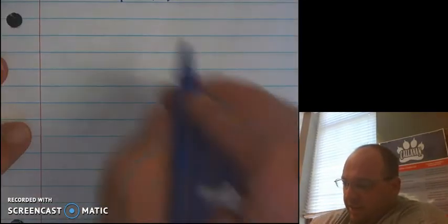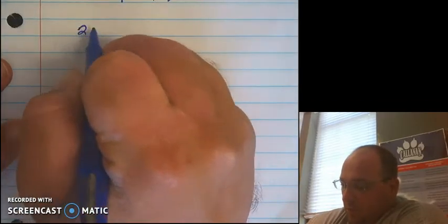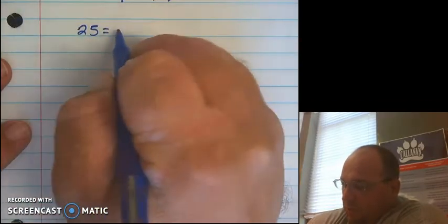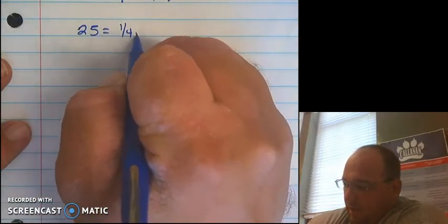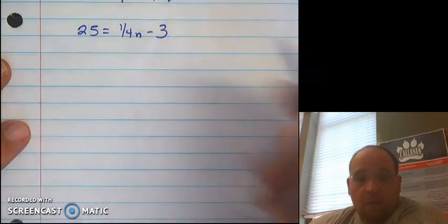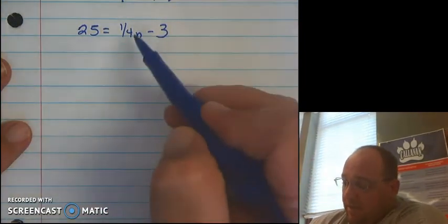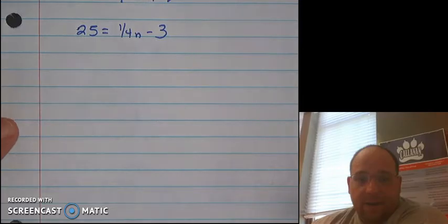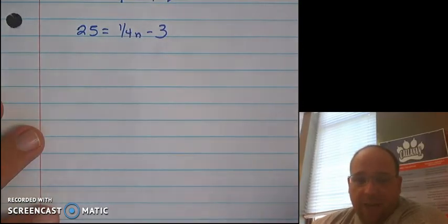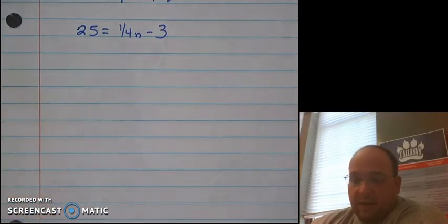All right, let's look at our next example. Our next example is 25 equals 1 fourth n minus 3. Please notice a couple changes here. One being that the variable is now on the right side, and now that we have a fraction.